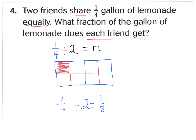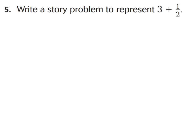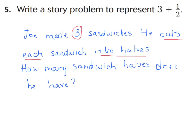For number five, write a story problem to represent three wholes divided by one half. Go ahead, pause the video, and create your own word problem to represent three divided by one half. Here's an example I made — it might be similar to yours. I can easily solve this by writing three divided by one half equals six halves. My model would look like three sandwiches cut into halves, giving me six halves.